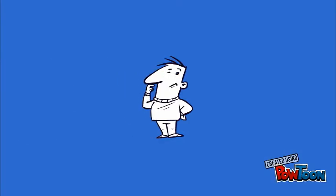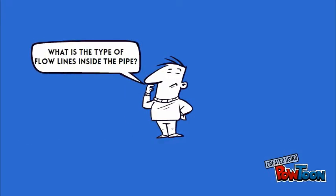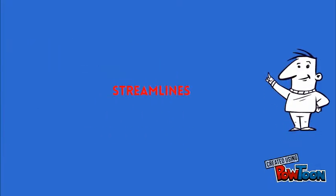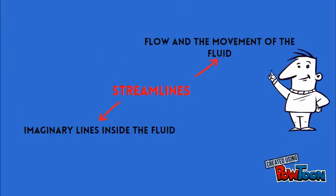The type of flow line inside the pipe is stream line that are tangent inside the fluid. It represents the flow and the movement of the fluid inside the pipe.